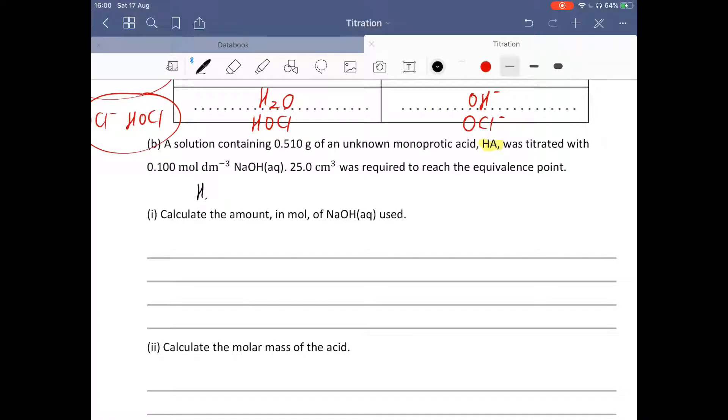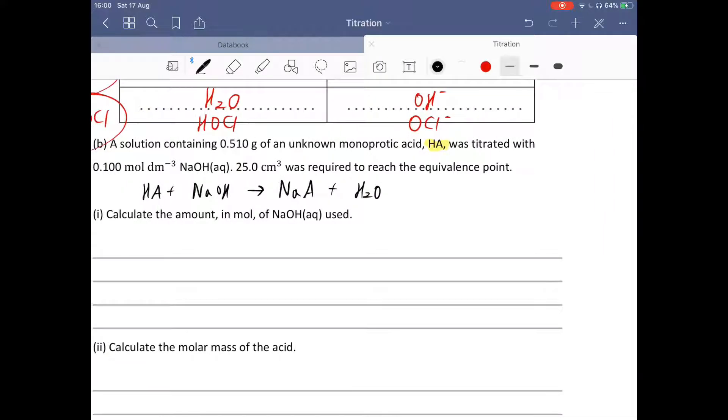Let's write down the chemical equation for this neutralization reaction. Acid plus base, sodium hydroxide, forming salt and water. The formula for the salt is NaA. Because sodium ion is one positive, it's a group one metal, and the anion is A1-, using the cross method, it's NaA.